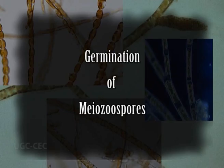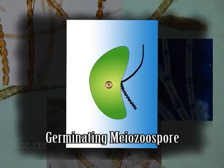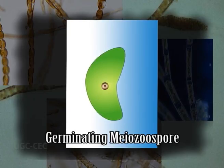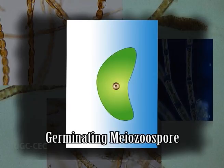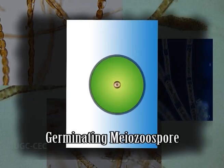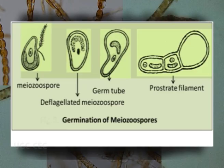Germination of meiospores: After swimming for a while, the meiospores on contact with a suitable substratum withdraw their flagella, become rounded, and secrete a membrane around them. Within a short time, a germ tube is formed which divides and re-divides to form the prostrate filaments. Some cells of the prostrate filaments become active and form erect filaments. The plants developed from the germination of these haploid meiospores are gametophytes or sexual plants in the life cycle.